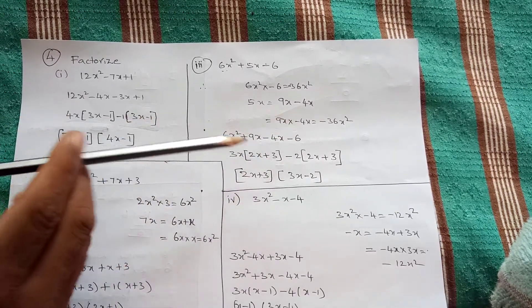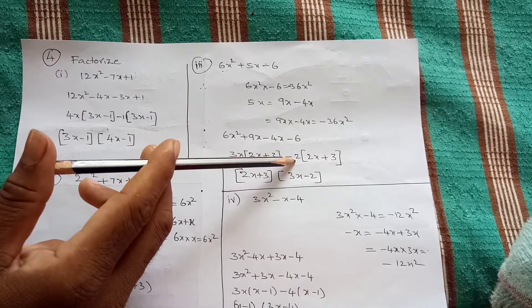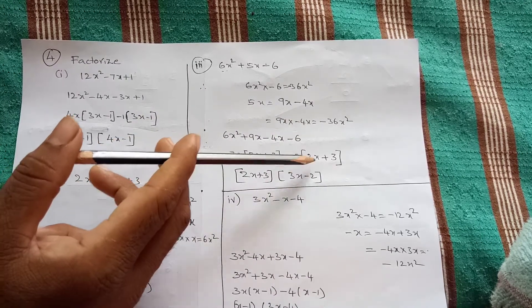From the third and fourth terms take minus 2 common, therefore 2x plus 3.